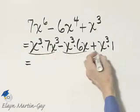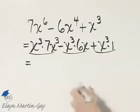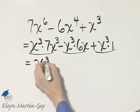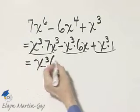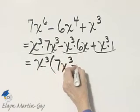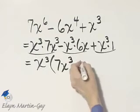Now though, in each of these three terms, we can see the x cubed that will factor out. If I factor it out from this term, I'll have 7x cubed minus, if I factor it from this term, I'll have 6x.